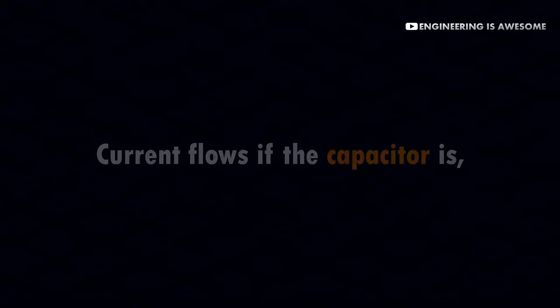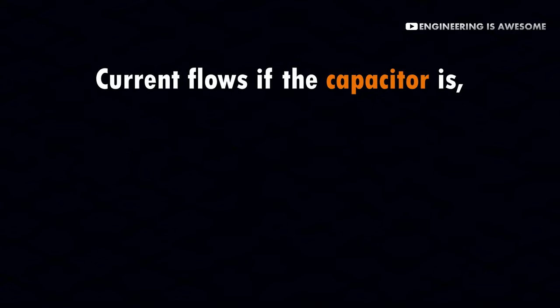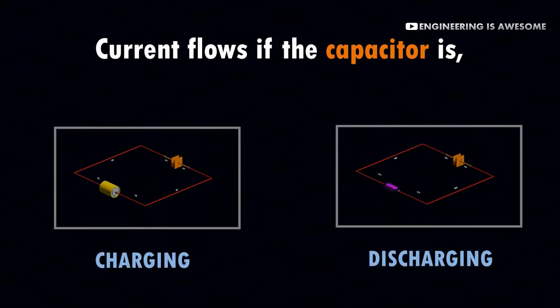So we can conclude that there is current flow in the circuit whenever the capacitor is charging and discharging.